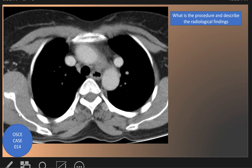The procedure here is CT of the chest. We see an enhancing vessel lateral to the aorta. This is the ascending, this is the descending, and this is the vessel enhancing, as large as the right superior vena cava.